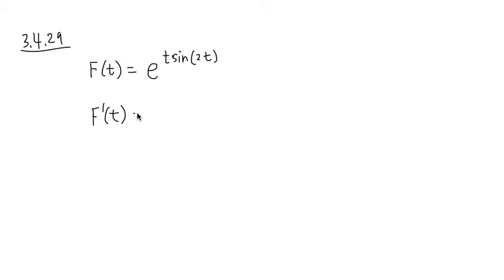To differentiate e to the something, that's like the best thing in the world. What you do is you just copy down exactly the same thing for now: e to the t sine 2t. And once again, this whole thing is in the exponent.